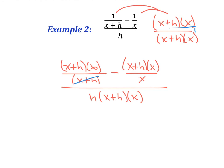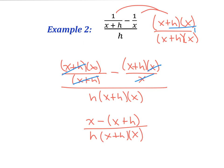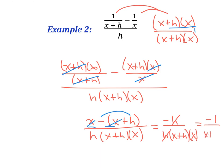In the numerator I see those factors cancel, leaving x minus the quantity (x plus h), all over h times (x plus h) times x. I also see that x minus x cancels, and I'm left with negative h. So I have negative h over h times (x plus h) times x, and the h's cancel. I'm left with negative 1 over (x plus h) times x — and that's my final answer.